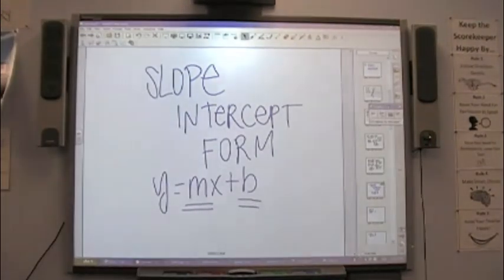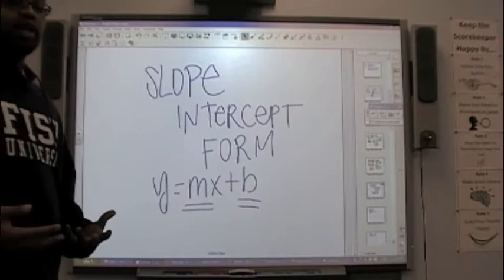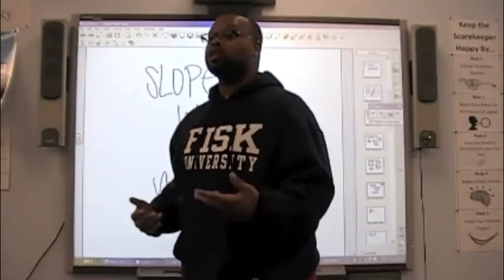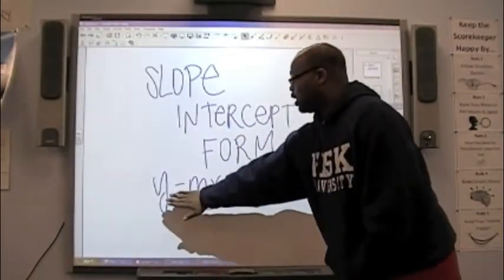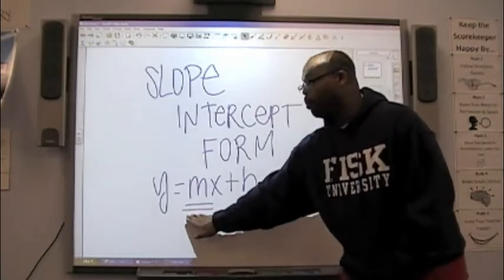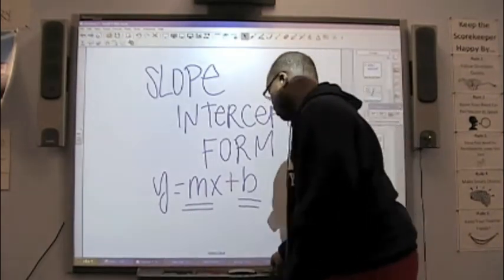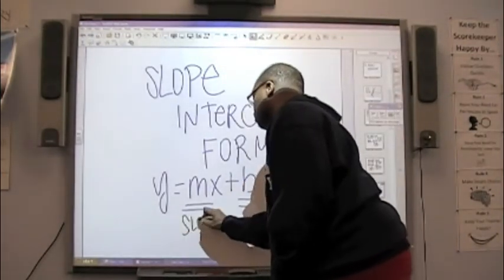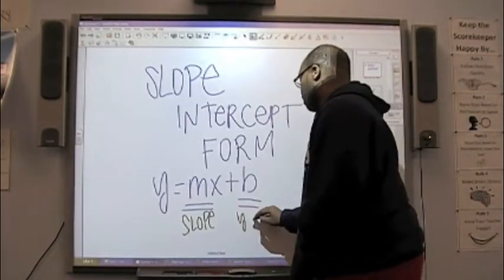It's used if you have the slope and the y-intercept. If we have the slope and the y-intercept, we want to use slope intercept form. Yes, it is y equals mx plus b when m is your slope and b is your y-intercept.